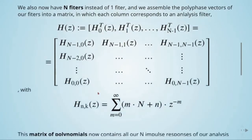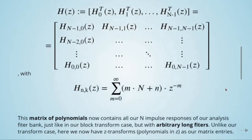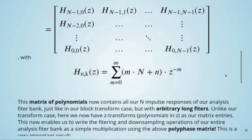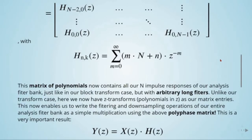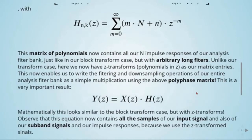We have this matrix here, and each element of this matrix is given by this equation. This matrix of polynomials contains all our N impulse responses for our analysis filter bank, just like in our block transform case but with arbitrarily long filters. Unlike our transform case, here we now have Z transforms — polynomials in Z — as our matrix entries. This enables us to write the filtering and downsampling operations of our entire analysis filter bank as a simple multiplication using the above polyphase matrix.